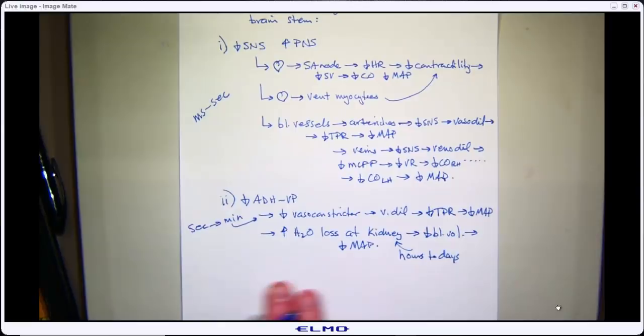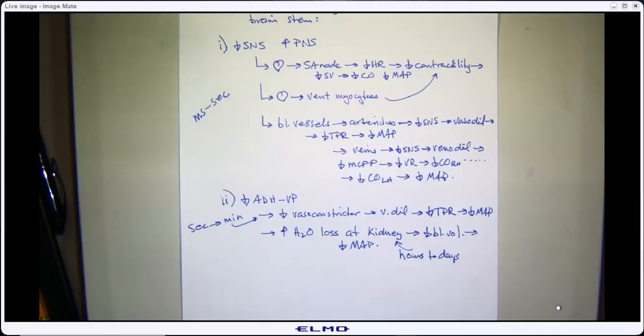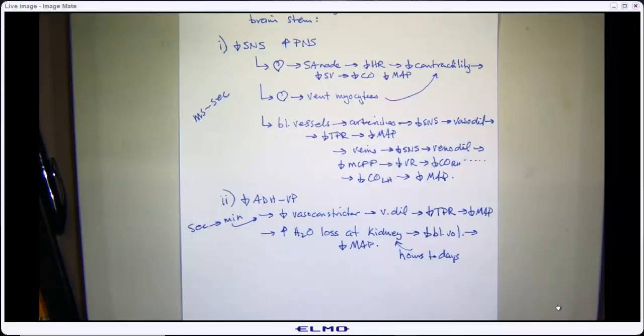Those are our high-pressure baroreceptors. They're called high pressure because they're sitting on the high-pressure side — right after the left ventricle — measuring those fluxes between 120 and 80 mmHg, which is producing our highest pressure. That's why they're called high-pressure baroreceptors: they're sitting on the high-pressure side of the body.